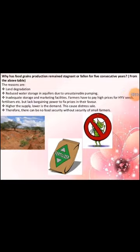Why has food grains production remained stagnant or fallen for five consecutive years? The reasons are land degradation, reduced water storage in aquifers due to unsustainable pumping, and inadequate storage and marketing facilities. Farmers have to pay high prices for high-yielding variety seeds, lacking the bargaining power to fix prices in their favor. Higher supply leads to lower demand, causing distress sales. Therefore, there can be no food security without security of small farmers.